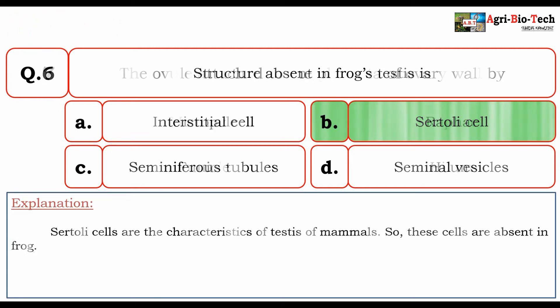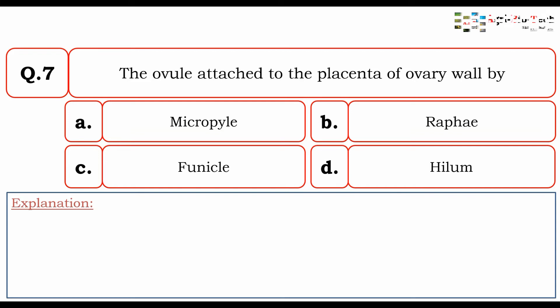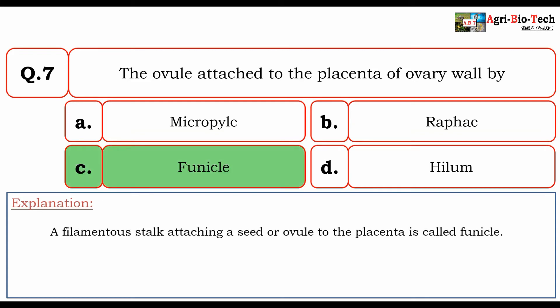Next question: the ovule is attached to the placenta of the ovary wall by — micropyle, raphe, funicle, or hilum? The correct option is C: funicle. A filamentous stalk attaching a seed or ovule to the placenta is called the funicle.